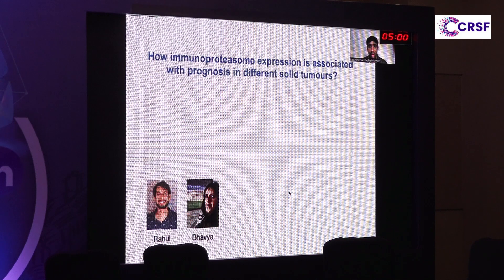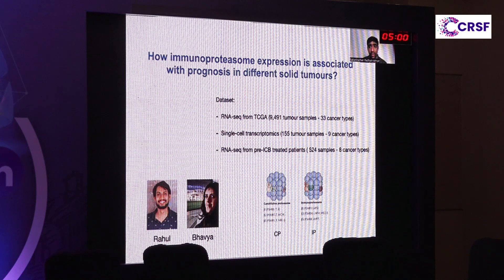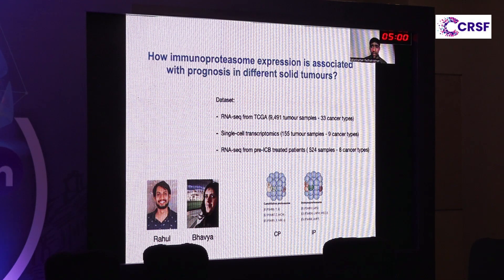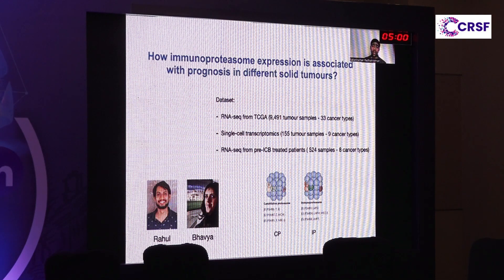Motivated by this knowledge gap, Rahul and Bhavya from our lab looked at how immunoproteasomes are expressed in other solid tumors and how that expression is associated with immune checkpoint therapies. For this, we looked at RNA expression from TCGA samples which had not undergone immunotherapy treatment, to see how immunoproteasomes are expressed and associated with prognosis for standard of care treatment — mostly surgery followed by chemo or radiation. We also looked at available single-cell data to examine expression from tumor cells, and included expression data from samples that underwent immune checkpoint therapy to compare immunoproteasome expression in responders versus non-responders.